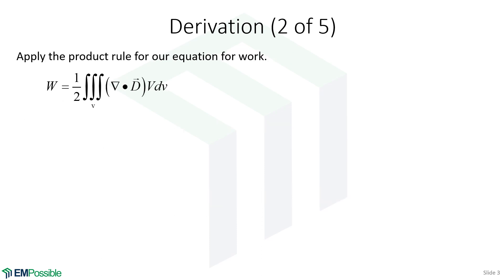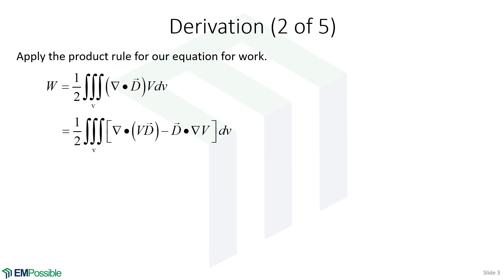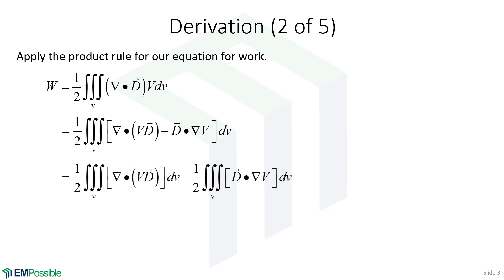Here's that volume integral from the previous slide, which we now know we can replace with the two terms that came from the product rule. We can separate this into two volume integrals and we end up here. But where do we go from here?